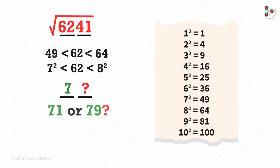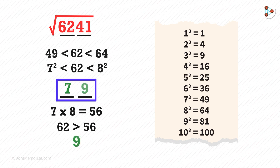For this, we'll have to multiply the 10th digit with its successor. So 7 times 8 gives us 56. Now let us look at 62. Let us see whether 62 is greater than 56 or not. 62 is greater than 56, hence we'll take the larger number, that is 9. So our answer will be 79.